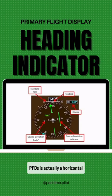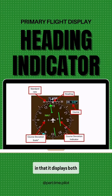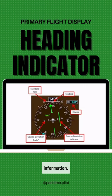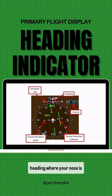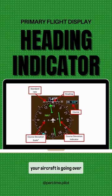The heading indicator on most PFDs is actually a horizontal situation indicator as well, in that it displays both navigation and directional information. The indicator tells you your heading — where your nose is pointed — and your course, where your aircraft is going over the ground.